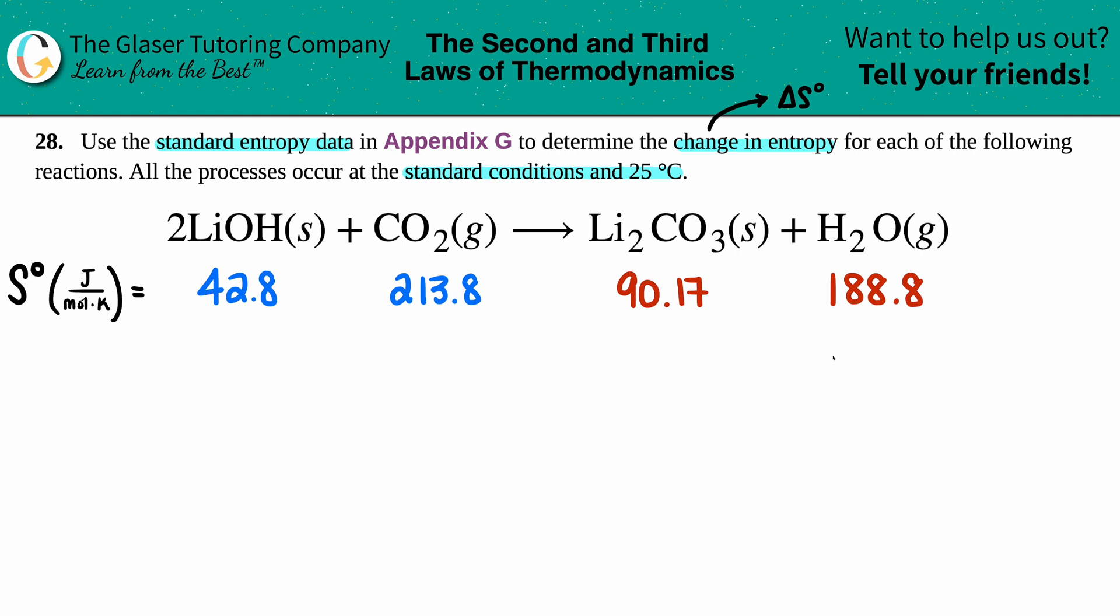Now what are we going to do with these values to get an actual delta S for the whole entire reaction? Well, that's this formula right here. The delta S for the whole entire reaction is always equal to the sum, so this just means sum, you're adding, sum of all your products minus the sum of all your reactants.